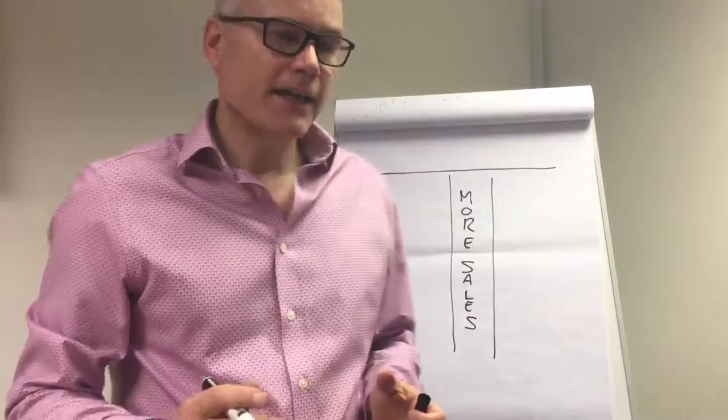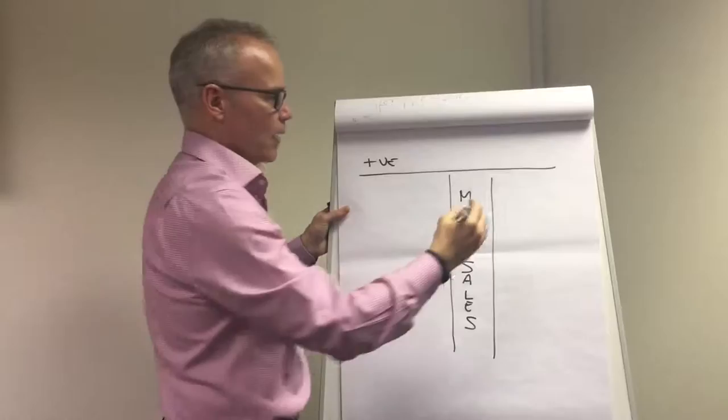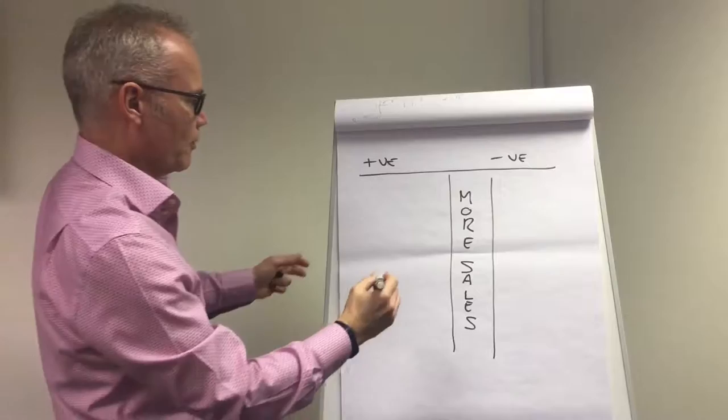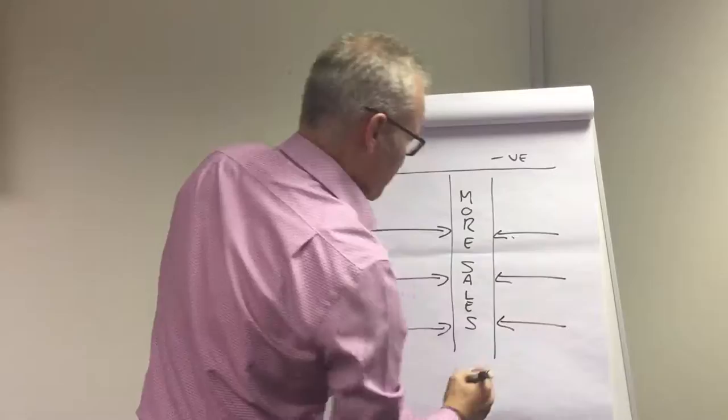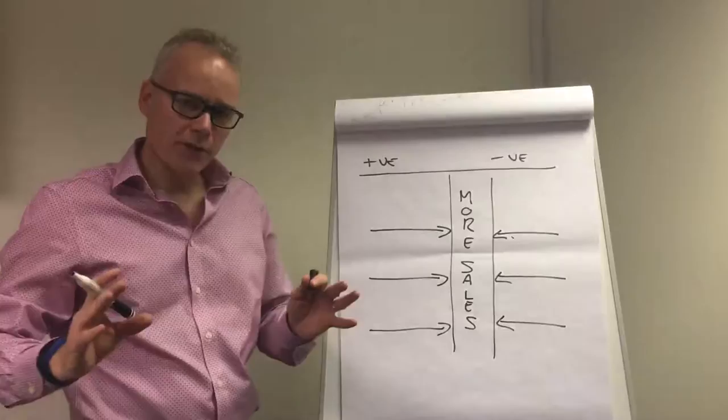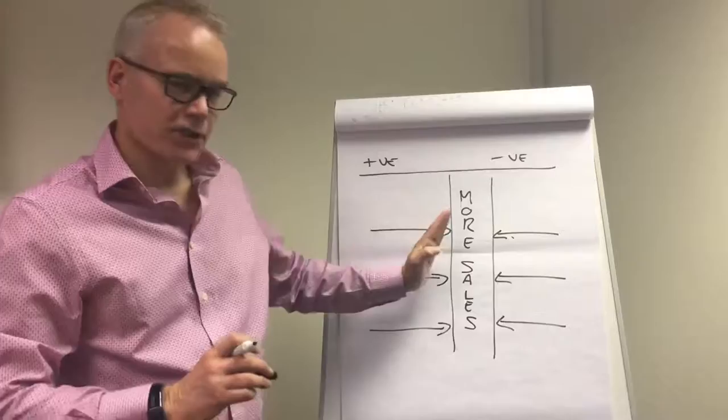So what we have is a series of forces. We have positive forces up here and we have negative forces up here, which are impacting on a particular problem. So we have a number of positive forces and a number of negative forces, and I'm just going to do this very quickly, so I'm going to limit myself to three on each side. What we need to do is come up with three things which we think are positive forces that are going to help us to increase sales.